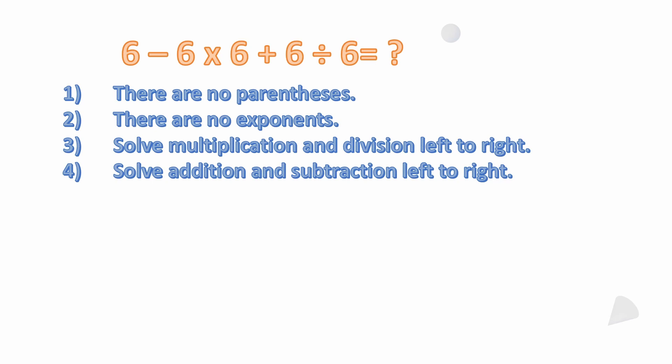As we look at this problem, we see that there are no parentheses. You may refer to those as brackets. Also, there are no exponents. Some might call those orders or indices, but we don't have any of those. So the way order of operations works is we go to look for multiplication and division, and we solve those left to right. And then we want to solve any addition or subtraction left to right.